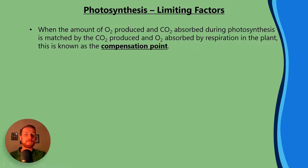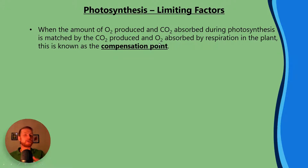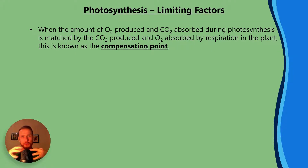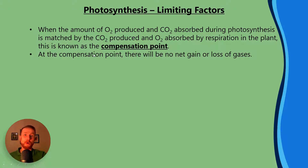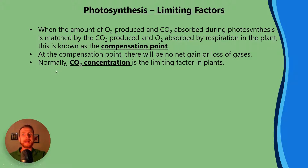When the amount of oxygen produced and carbon dioxide absorbed is matched by the carbon dioxide produced and the oxygen absorbed by respiration, that's known as the compensation point, because respiration releases CO2 and photosynthesis takes in CO2. At the compensation point, there will be no net gain or loss of gases. Remember, plants respire too.